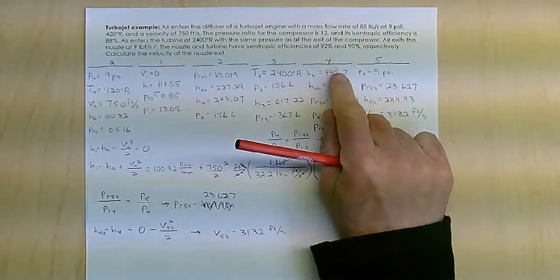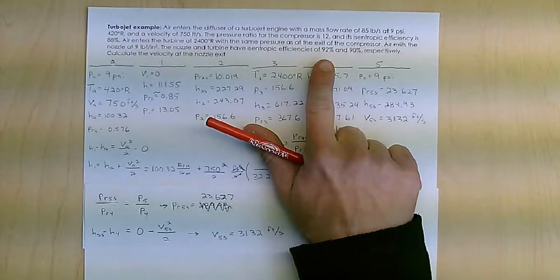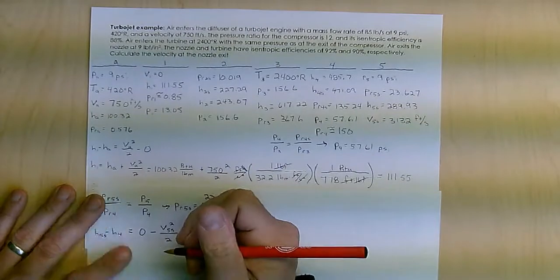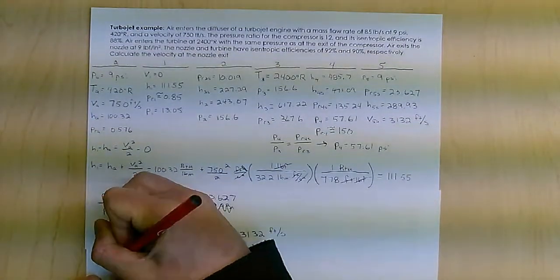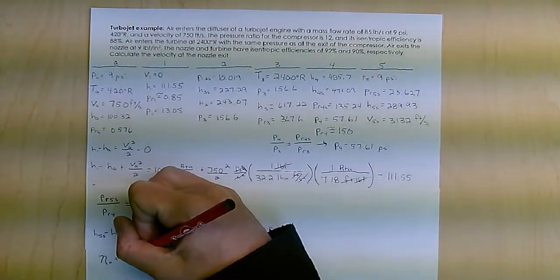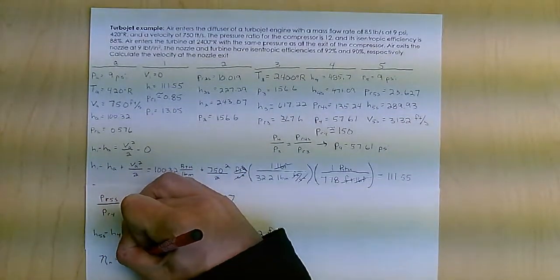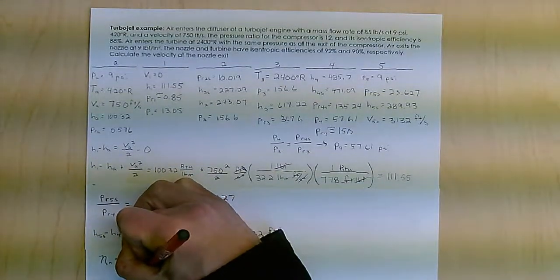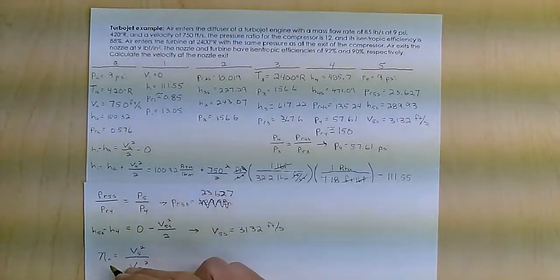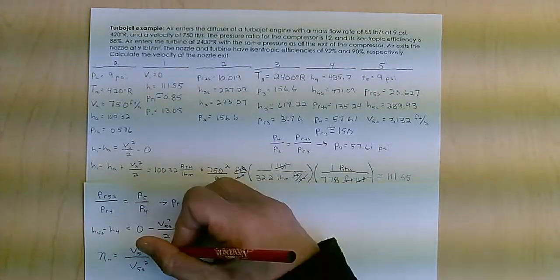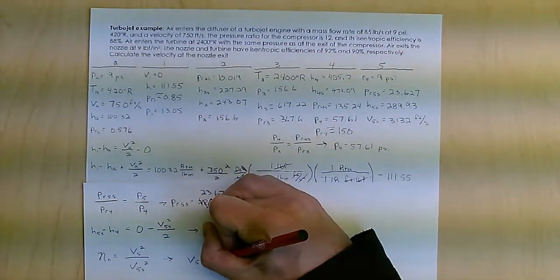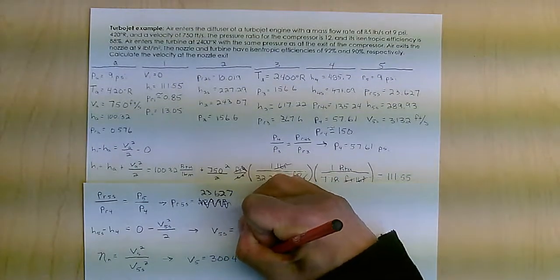However, I have a nozzle efficiency of 92%. And what you'll remember, hopefully, from the nozzle efficiency is that the nozzle efficiency is actually V5 squared over V5S squared. From that, I know my nozzle efficiency. I know V5S. I can find V5. And this is the answer I'm actually looking for is 3,004 feet per second.